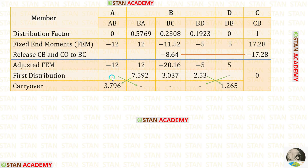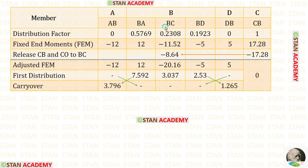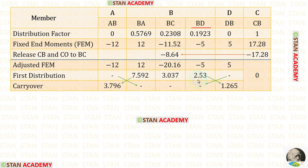Now let us make the carry-over. For AB there is no distribution, so we cannot carry over from AB to BA. For BA the distribution is 7.592; dividing by 2 gives the carry-over to AB. Between BC and CB we cannot make a carry-over because we have already released CB and made it 0. For BD the distribution is 2.53; dividing by 2 gives the carry-over to DB. From DB we cannot carry over to BD because there is no distribution there.